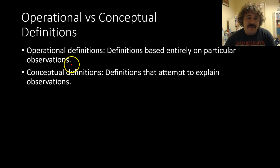But then later on you get conceptual definitions. Now conceptual definitions, they try to explain our observations. So first we go, we would say for example, that animals change over time. Water boils at 100 degrees and has a high surface tension. And these would be operational definitions.